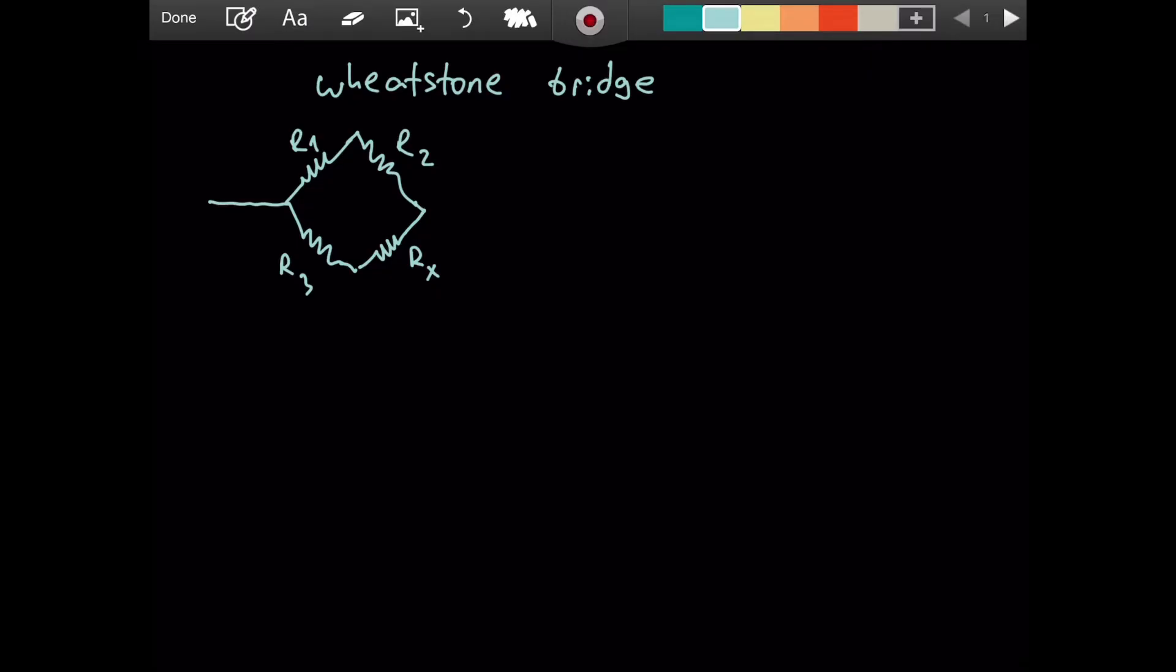Our whole goal in this circuit, in this Wheatstone bridge, is to figure out the resistance value of Rx if we know the resistance of all other three resistors. This of course continues, maybe there is a battery here, we don't know and we don't care. But there will be a current coming through.